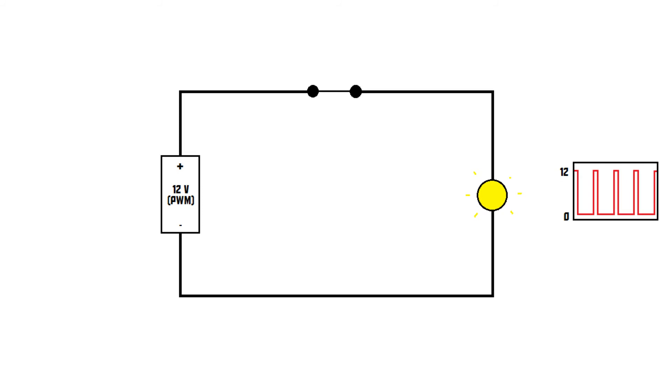And that light bulb can also be replaced with other electronic devices like an electric motor. The speed of the fans in your computer is also controlled using PWM.